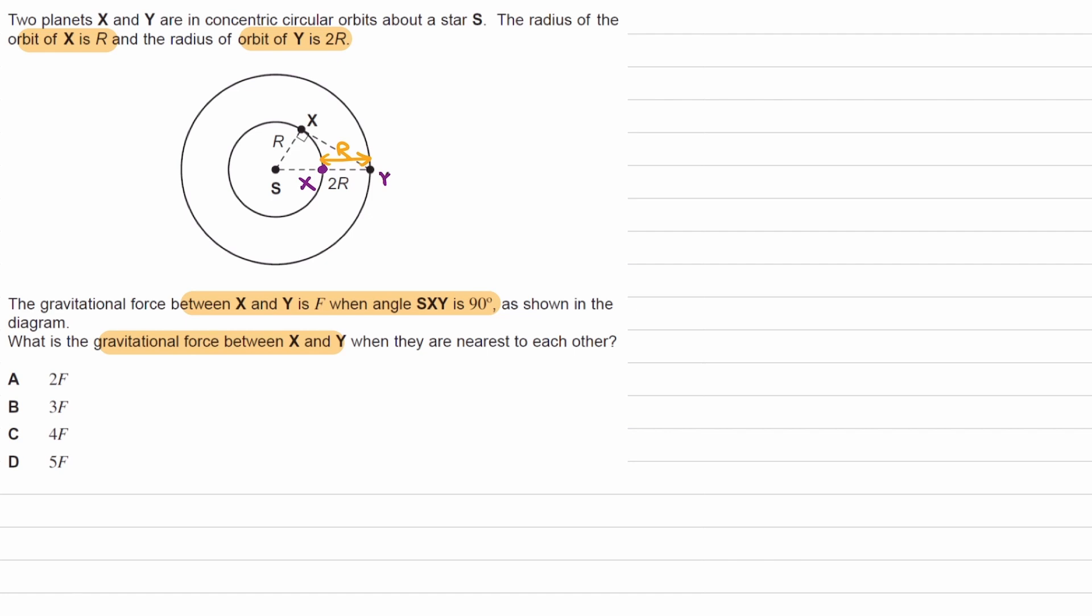We're trying to work out what force is. The equation we want to be using is F equals GMm over R squared. Now the masses are not changing. The mass of X, the mass of Y, they're not changing. So we can say that force is proportional to 1 over R squared.